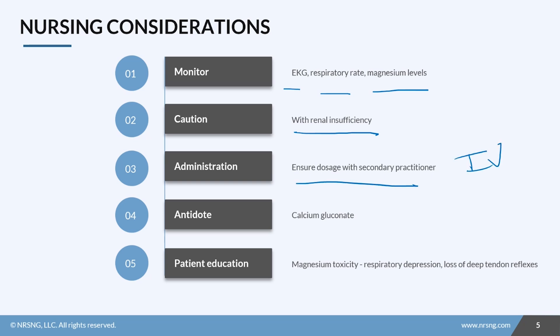The antidote for magnesium sulfate is calcium gluconate, so that is important in the event of an overdose. It is important that the patient knows that magnesium toxicity can occur. With this, we see things like respiratory depression, as well as a loss of deep tendon reflexes, and decreased cardiac output.